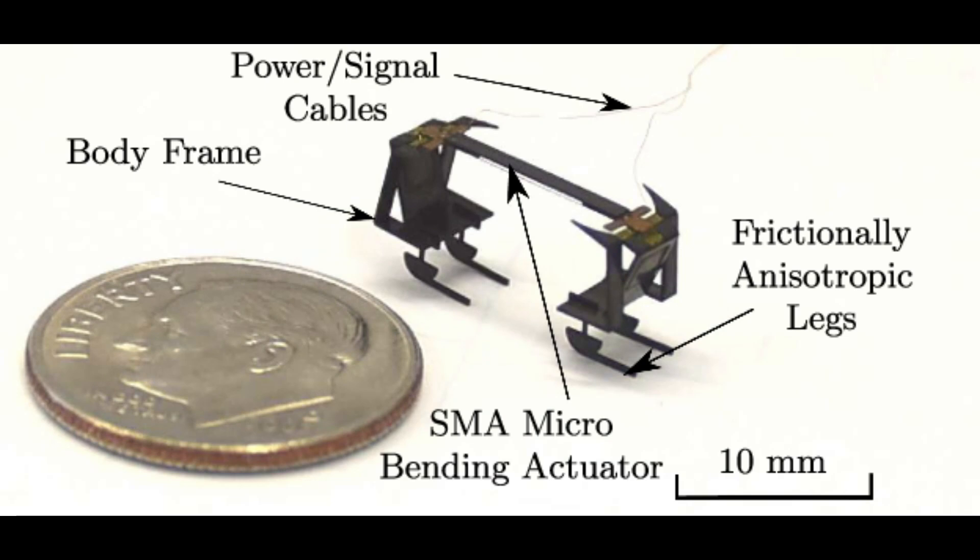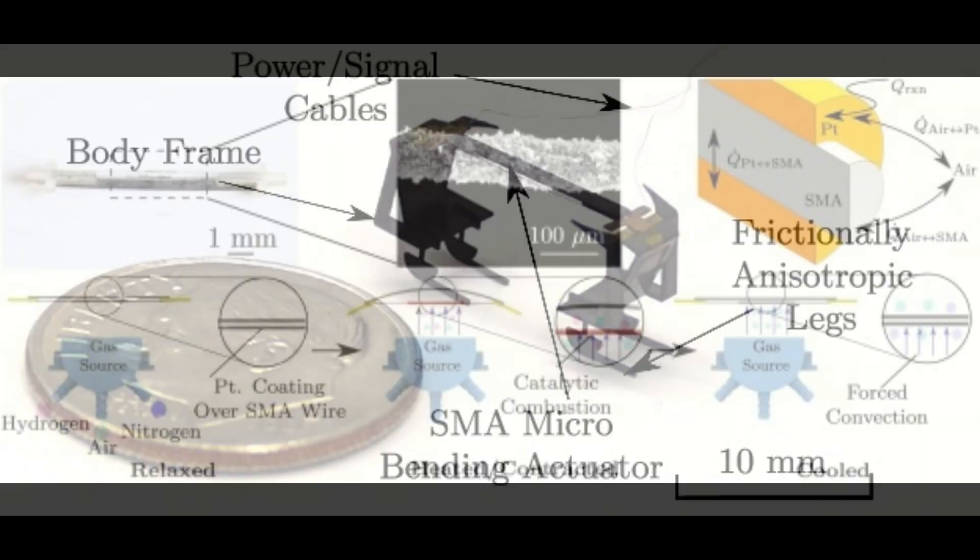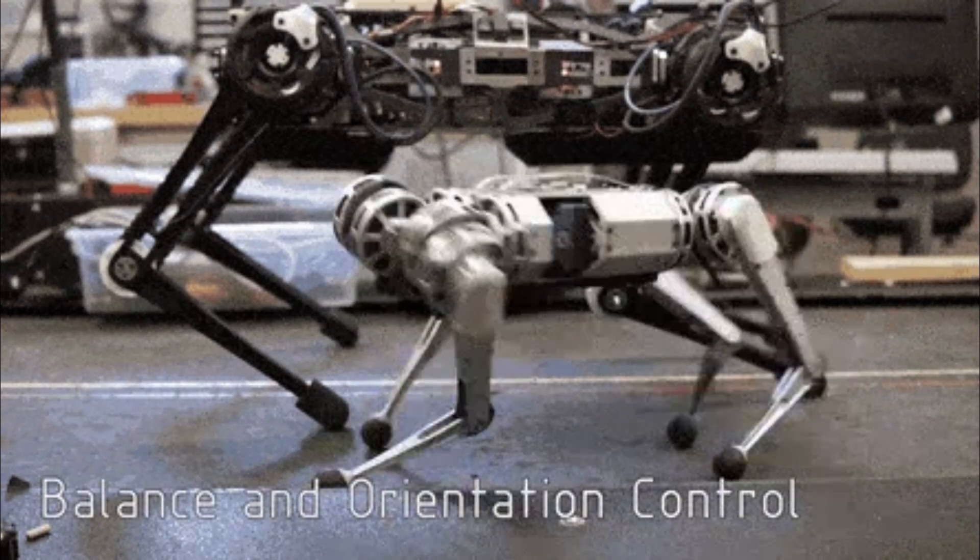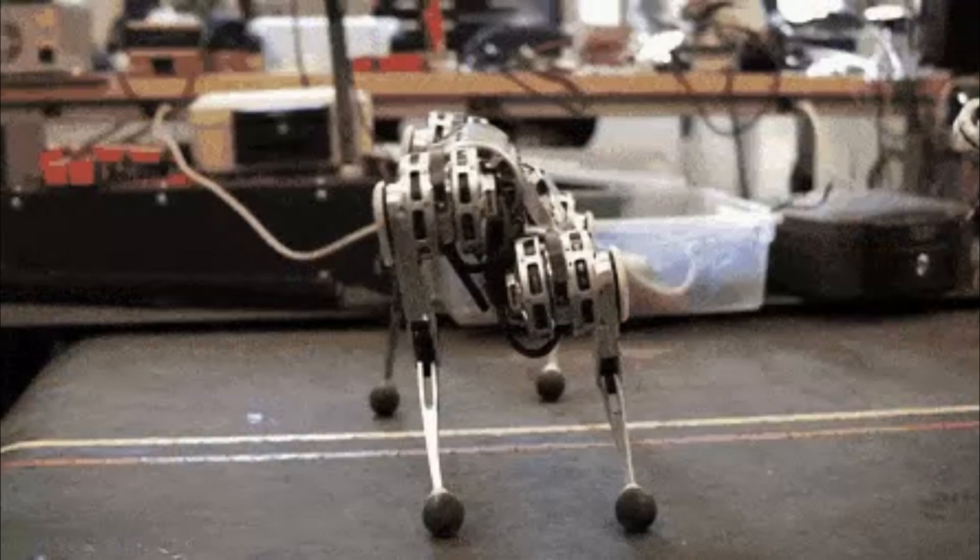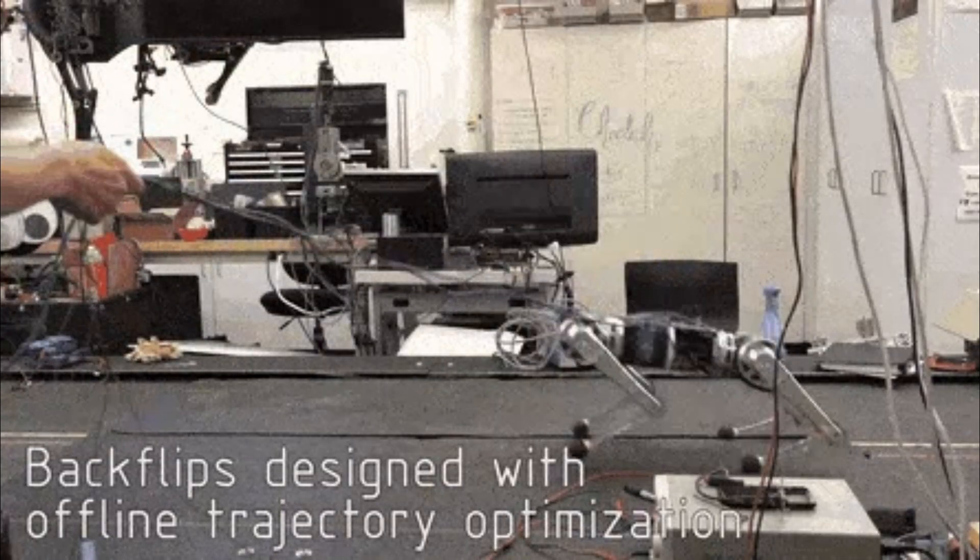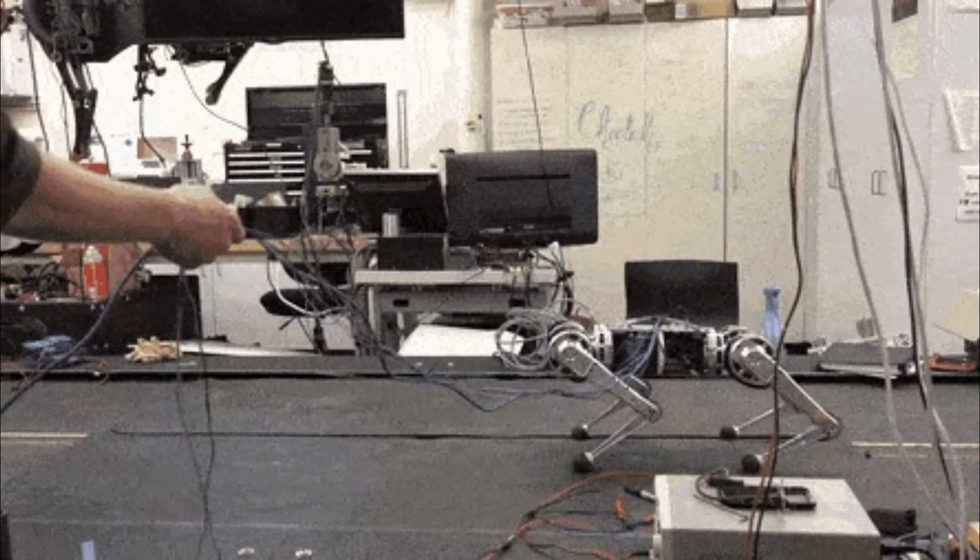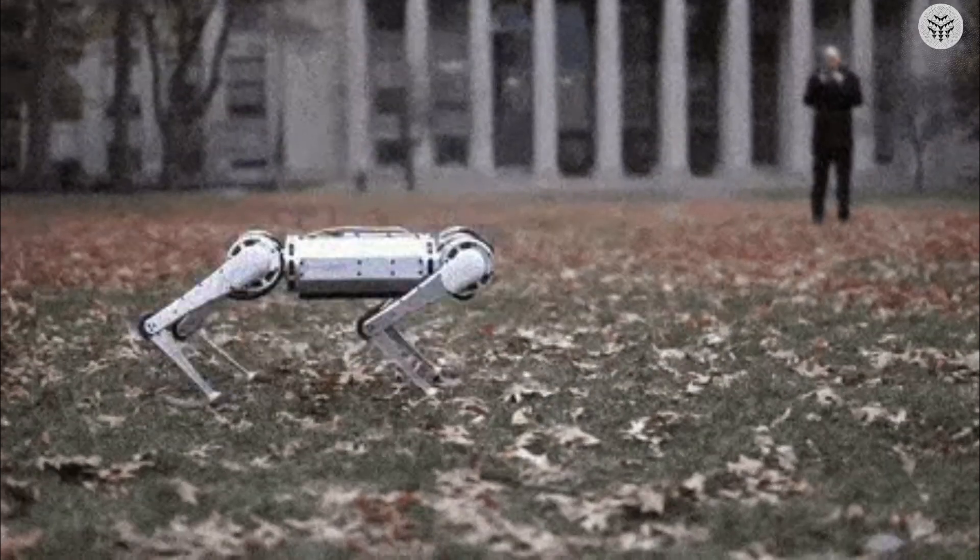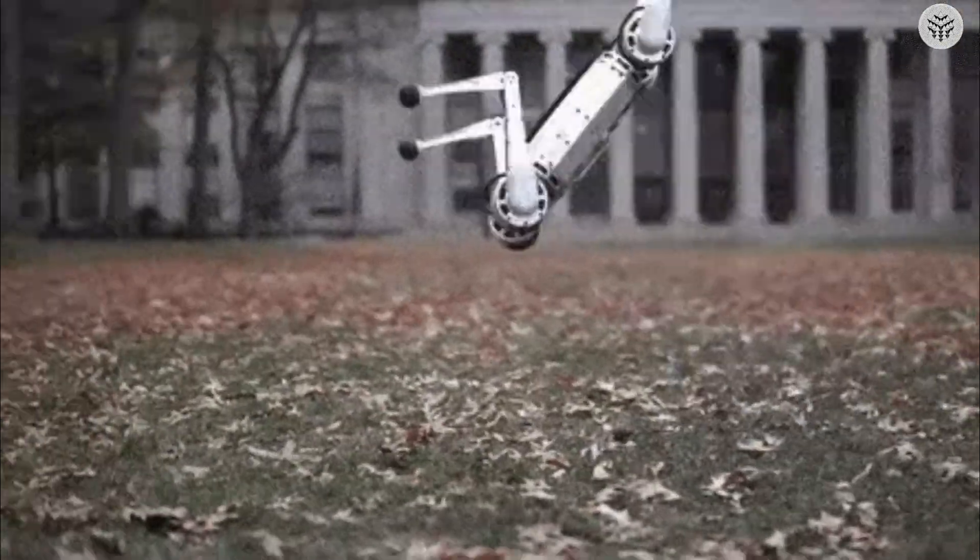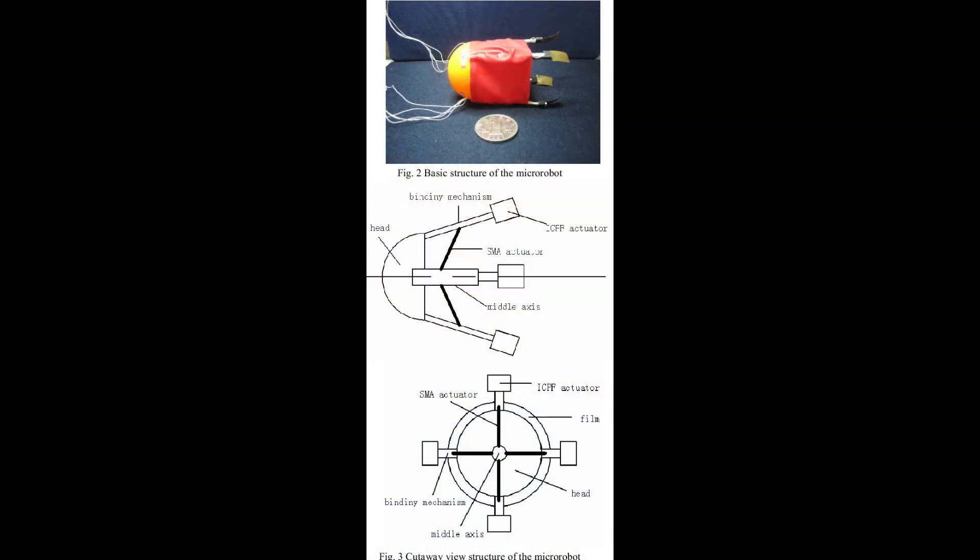Today's video focuses on the groundbreaking work of researchers at Washington State University who have successfully created mini robots inspired by insects. These remarkable robots are not only the smallest and lightest ever developed but also the fastest. Their potential applications are vast, ranging from artificial pollination to search and rescue missions, environmental monitoring, microfabrication and even robotic assisted surgery.